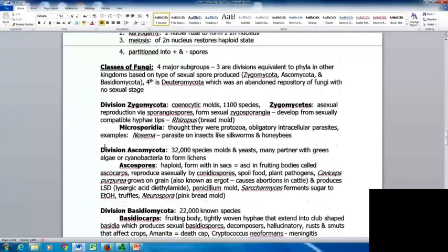With the classes of fungi, there's four major subgroups. Three are divisions equivalent to phyla based on the type of sexual spore produced: Zygomycota, Ascomycota, and Basidiomycota. The fourth is Deuteromycota, an abandoned repository of fungi with no sexual stage.